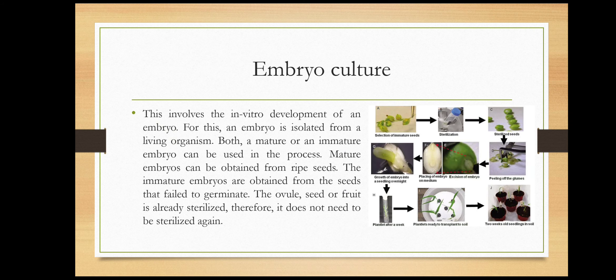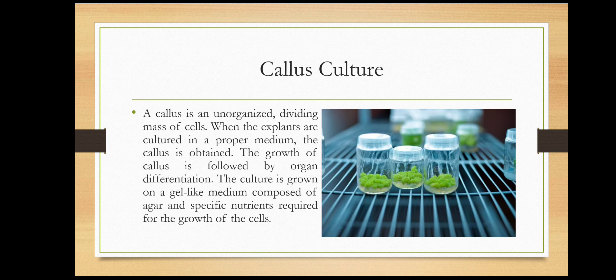Embryo culture involves the in vitro development of an embryo. For this, an embryo is isolated from a living organism. Both a mature or an immature embryo can be used in this process. Mature embryos can be obtained from ripe seeds, while immature embryos are obtained from seeds that fail to germinate. The ovule, seed, or fruit is already sterilized, therefore it does not need to be sterilized again.